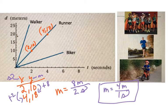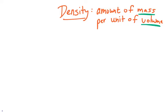And so this would be the rate of change in which this runner is moving, 4 meters for every 1 second. Now, we could also do that for the walker, for the biker. But those units play a pretty crucial role in this. Now, let's take that idea to density.